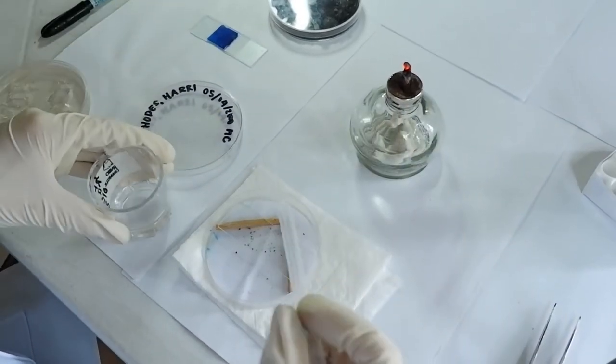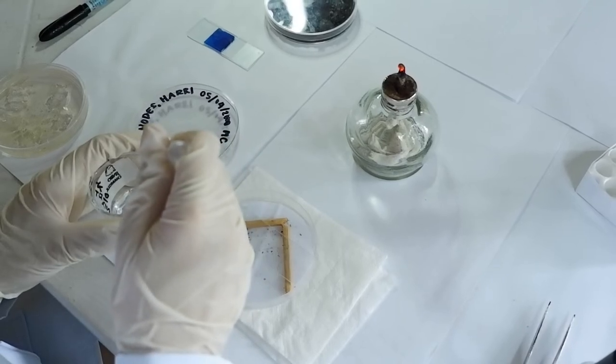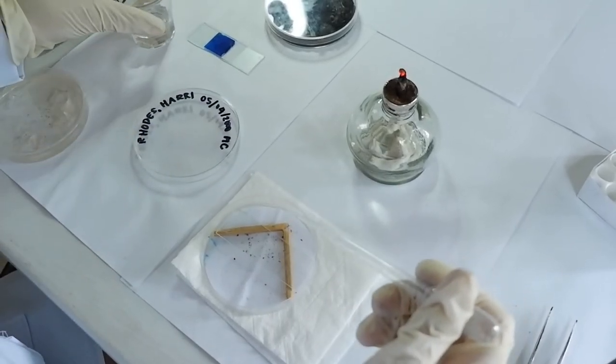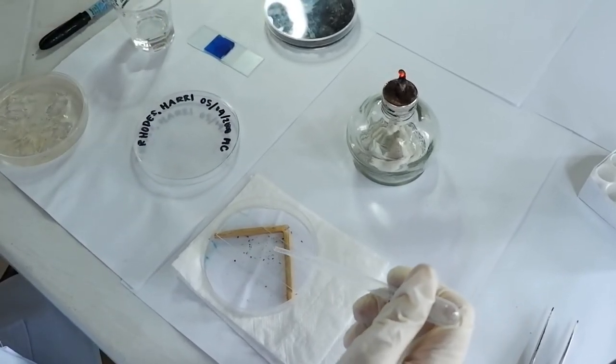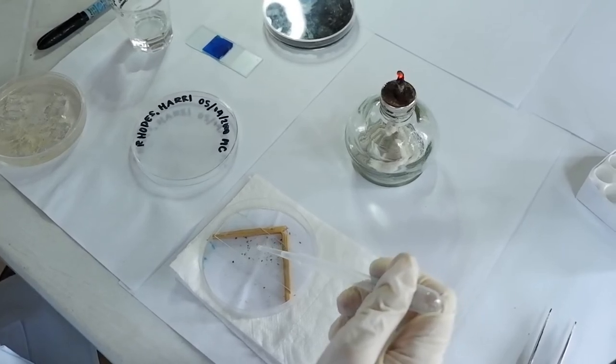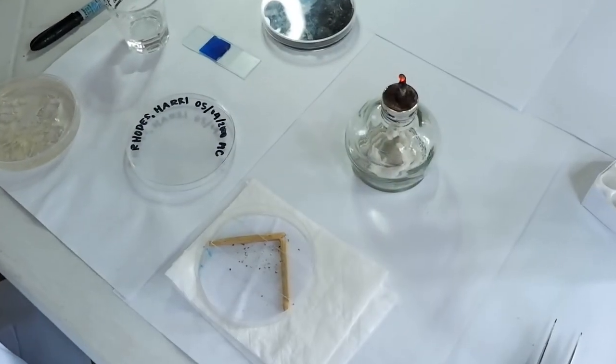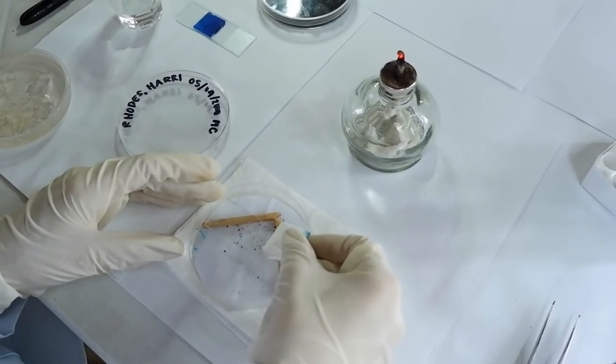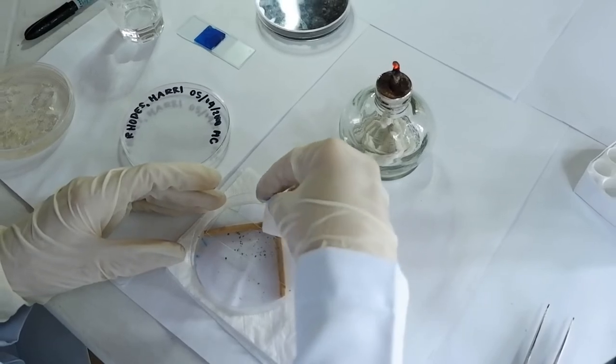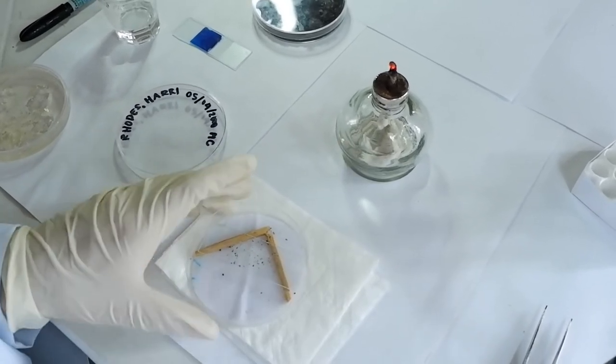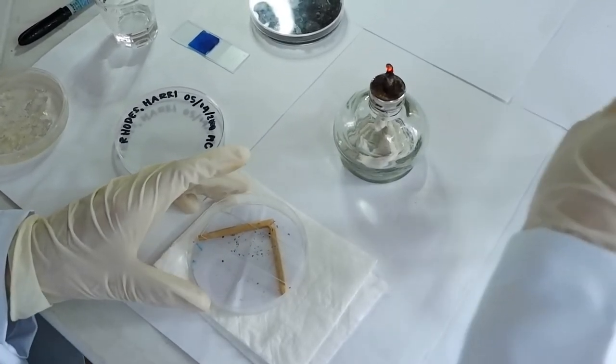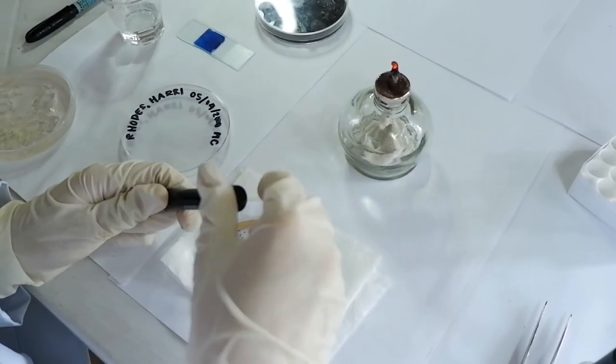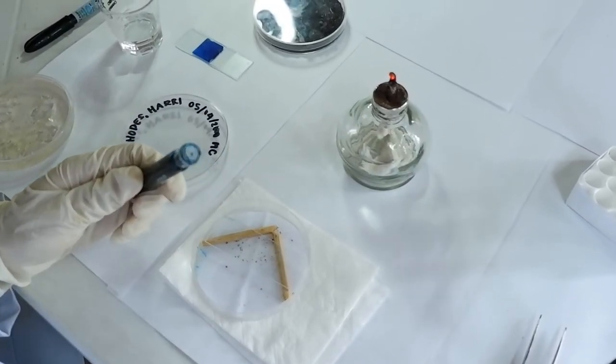Place a drop of absolute alcohol on the growth on the slide. Now remove the excess alcohol by draining with tissue paper and remember not to wipe or blot. Place a small drop of LPCB on the center of the growth.